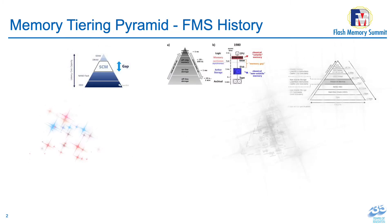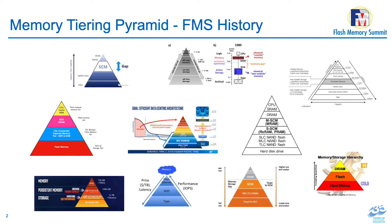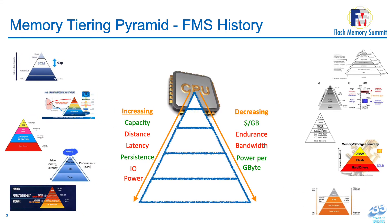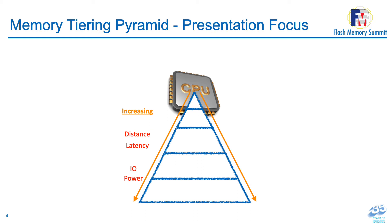As we all know, the memory tiering pyramid has featured extensively in Flash Memory Summit's history, depicting various technology shifts and where companies fit in that pyramid. This typically shows the processor at the top, with increasing capacity, latency, distance, persistence, or IO power going down, and decreasing dollars per gigabyte, endurance, bandwidth, and power per gigabyte. I'm going to focus on latency and IO power, with distance as an obvious latency contributor.